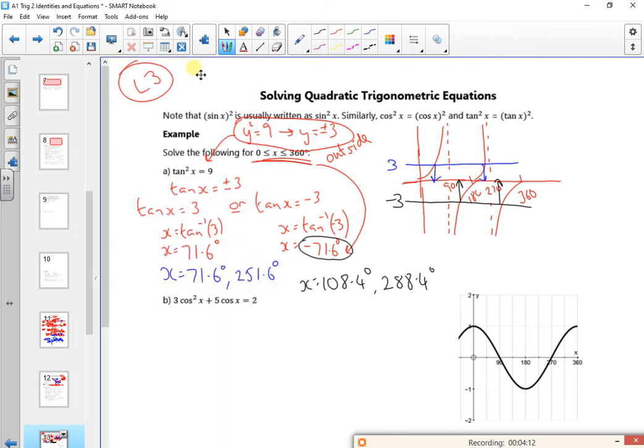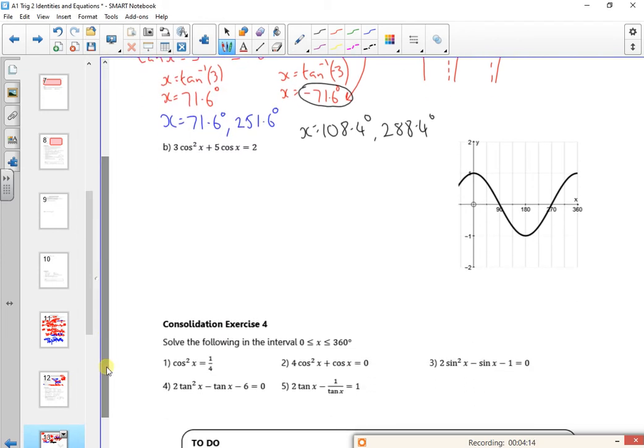Right, let's have a look at this one then. So this next one looks like a disguised quadratic. If I have it as 3 cos squared of x plus 5 cos of x minus 2 is 0, in poly I can put 3, 5, minus 2. So let's give that a go.